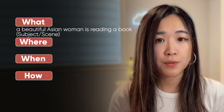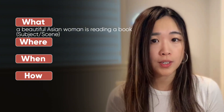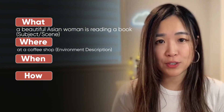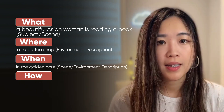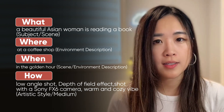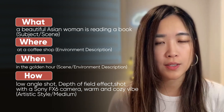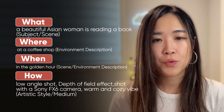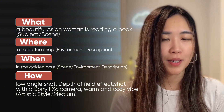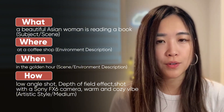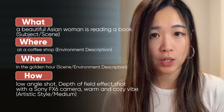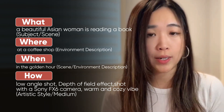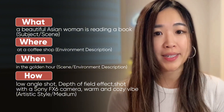So for my prompt: what is 'a beautiful Asian woman reading a book,' where is 'at a coffee shop,' when is 'golden hour,' and how is 'low angle shot, depth of field effect, shot with Sony FX6 camera, warm and cozy vibe.' I'm not sure if the training involved all these details, but I'm just trying. It's an easy prompt structure to quickly create a detailed prompt without over-complicating the process.